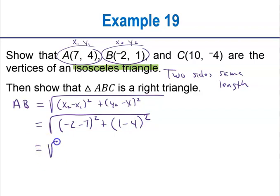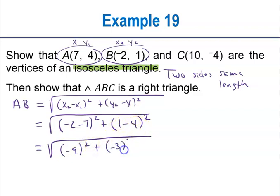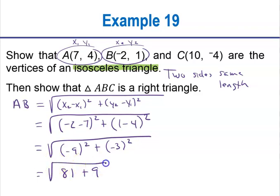Make sure you understand we're just plugging in the coordinates. Then the next step is subtraction — parentheses first, order of operations. Negative 2 subtract 7 is negative 9. Then 1 subtract 4 is negative 3. And notice negative numbers are going to turn positive now. Negative 9 squared is positive 81. Negative 3 squared is 9. This is why it doesn't matter which you call x₁ or x₂ — when you square those differences, it turns positive anyway. That gives me the square root of 90.